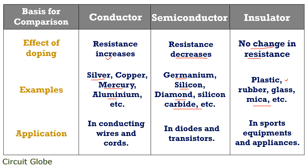Conductors are used in conducting wires and cords. Semiconductors are used in diodes and transistors. While insulators are used in sports equipment and household appliances.